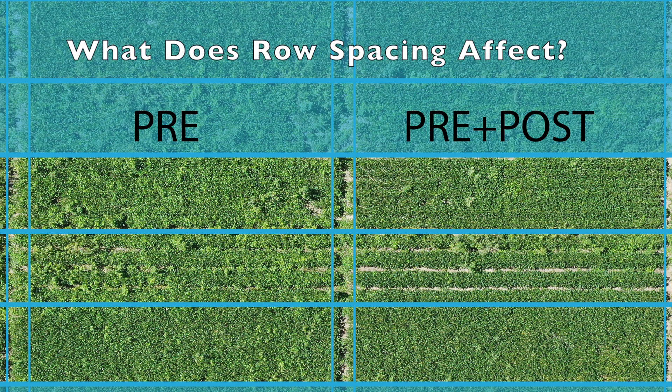Early crop canopy formation blocks sunlight, affects weed seedling emergence, and suppresses the growth of any emerged weed seedlings. The critical period of weed control can be shortened through the use of narrow rows, which may reduce reliance on herbicides and/or improve their efficacy.